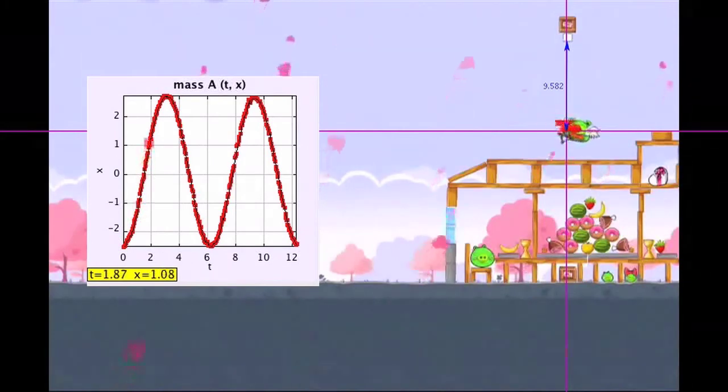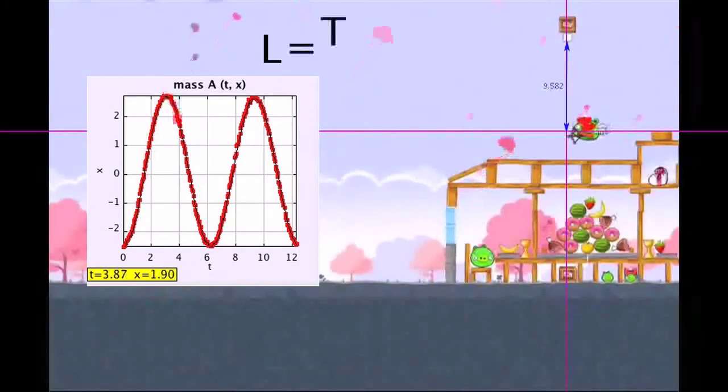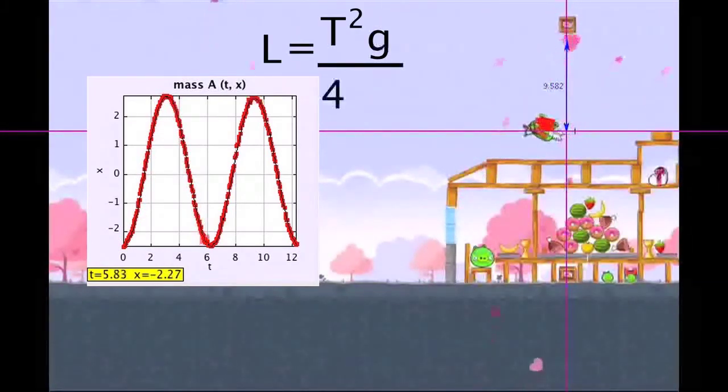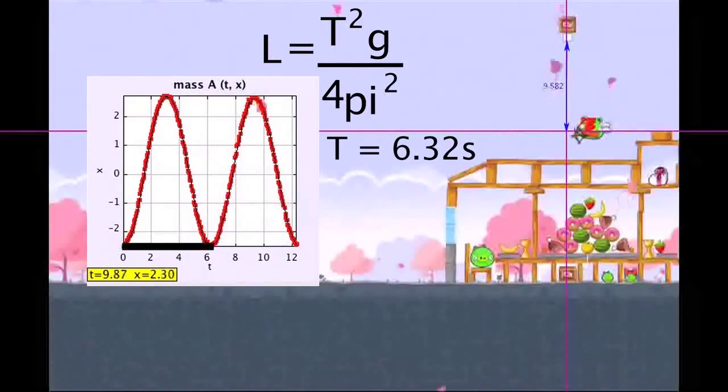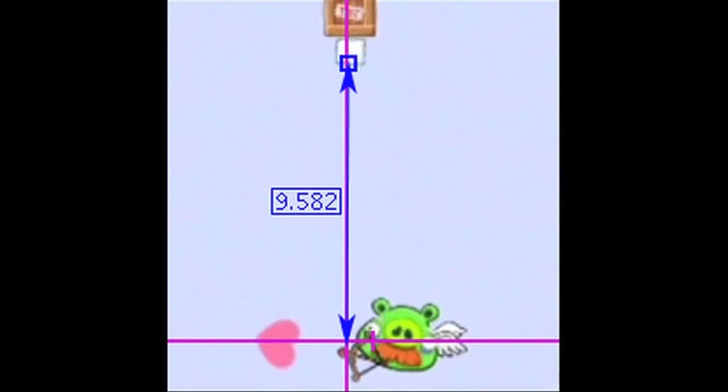Now, using the previous equation and isolating L, I get L equals T squared times gravity divided by 4 pi squared. And plugging in the period, or time it takes from trough to trough or crest to crest, I get 9.915, which isn't 9.582, but it's only off by 40 centimeters.